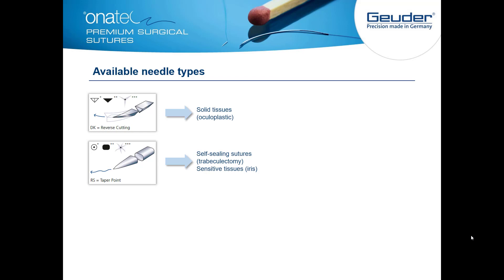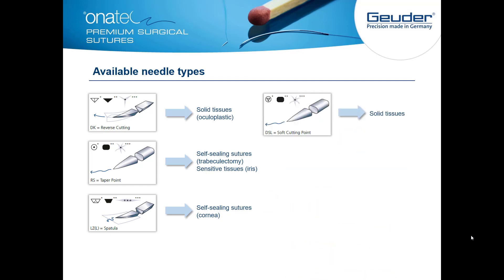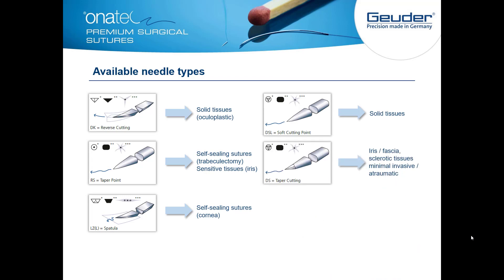Taper point is used for example in trabeculectomy and sensitive tissues such as the iris. Spatula shape is used for self-sealing sutures on the cornea. Soft cutting is used for solid tissue, and taper cutting for iris fascia and sclerotic tissue, for a minimally invasive and atraumatic procedure.